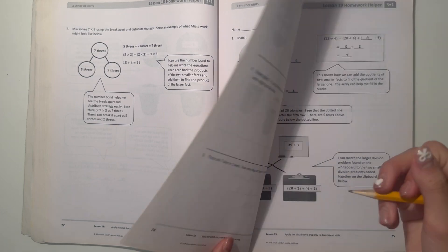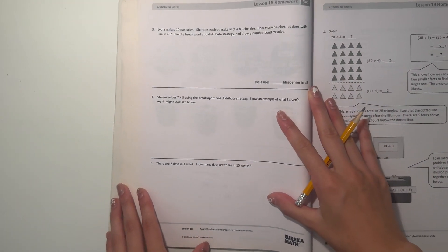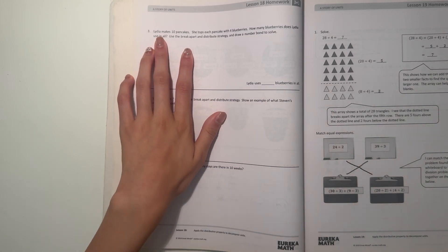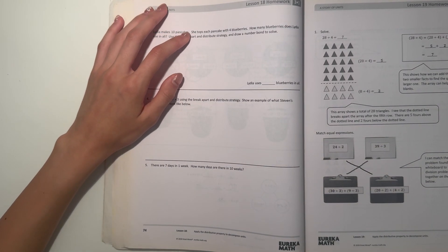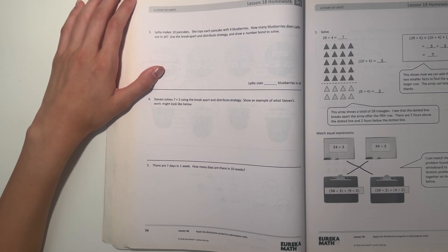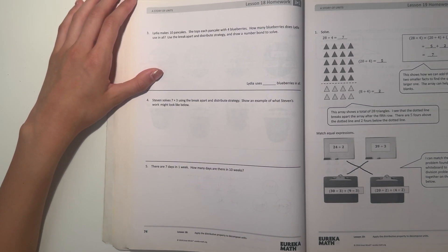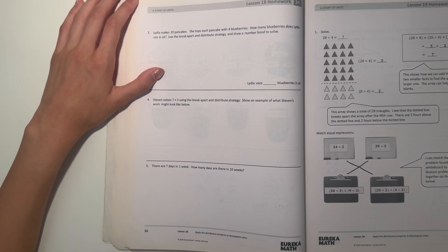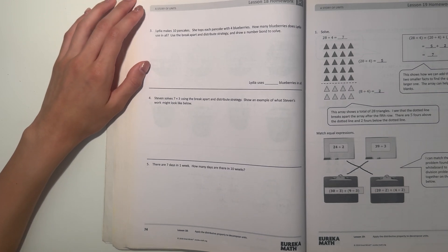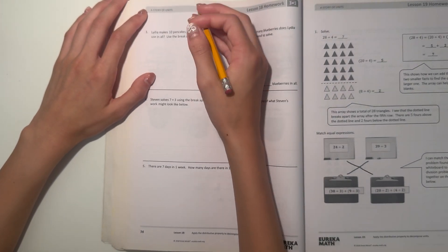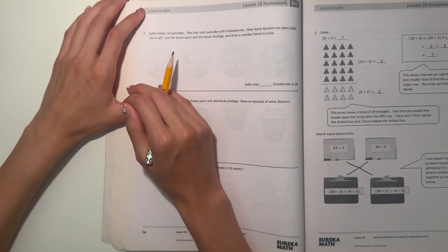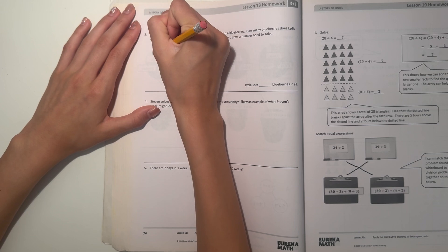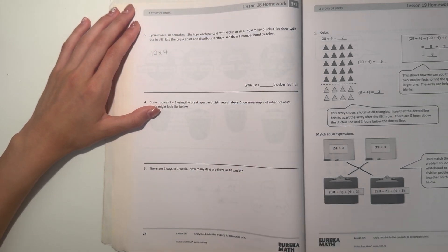All right, next page. Okay, so number three. Lydia makes 10 pancakes. She tops each pancake with four blueberries. How many blueberries did Lydia use in all? Use the break apart and distribute strategy and draw a number bond to solve. So this is basically what we did on the other page. Since she made 10 and she used four blueberries on every pancake, then we do 10 times four. We draw another bond.